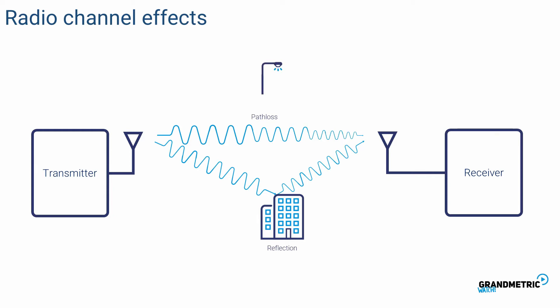On the sharp edges waves can diffract. Smaller objects can be source of scattering. Those effects combined cause multipath channel. Single signal can travel via different paths and still reach the receiver.